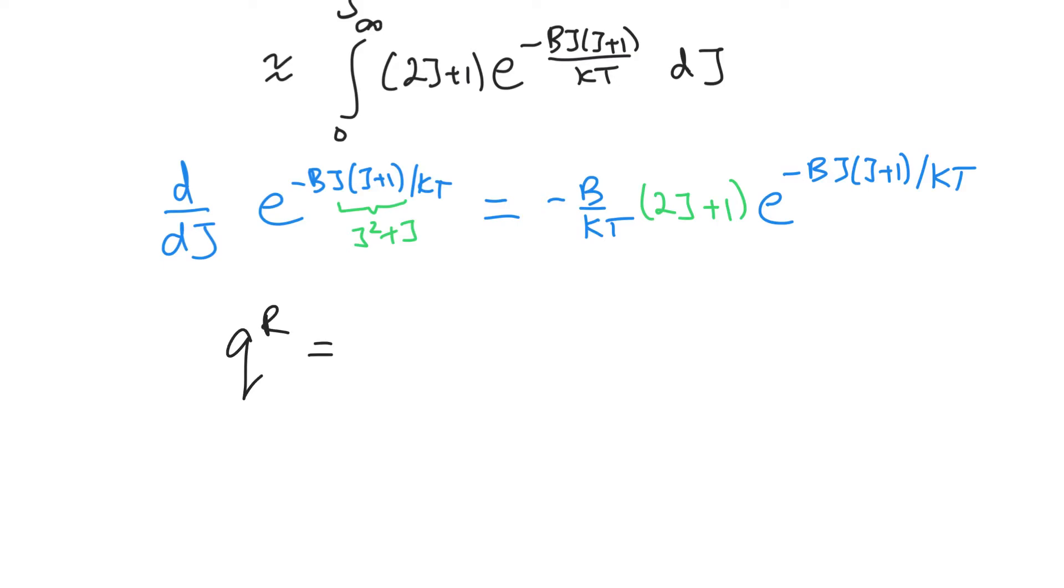Now we can finish this off. So q_r is equal to - we need this function here, we need to invert it, because when we multiply that we need to cancel it. So it would be minus kT over b. And then that integral up here now is exactly what we need. So we know if we differentiate this, we get this times this extra term. And so the anti-derivative is the integral. So this thing up here is the answer to our integral. It's e to the minus bj(j+1) divided by kT, and we have the limits of j equals zero and j equals infinity.